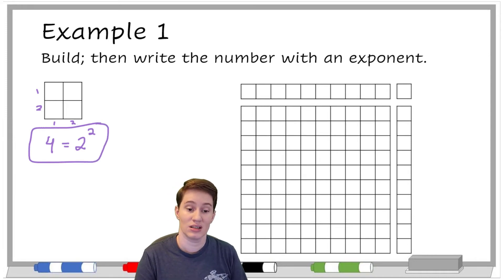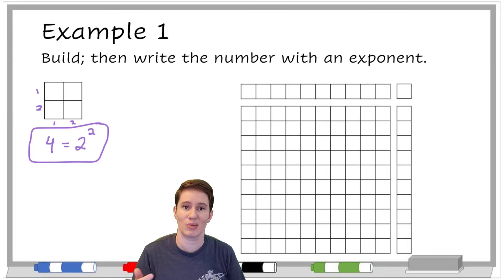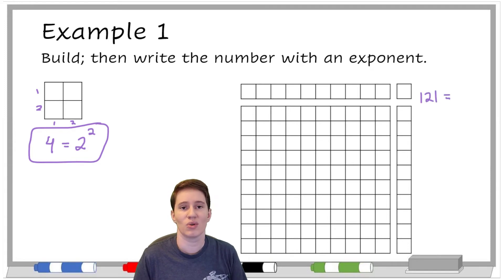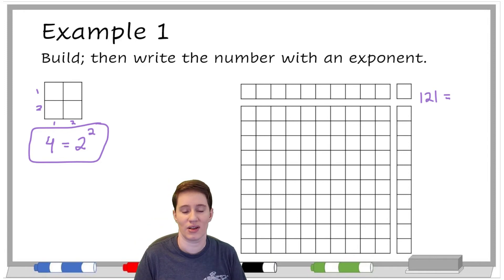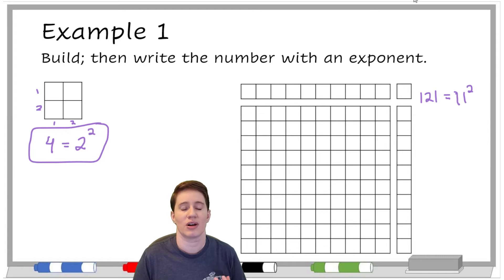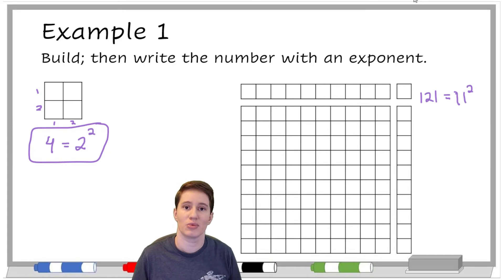We could do the same thing with the second figure. This big set of 10 by 10 would be 100, and then we have a 10 length on top and a 10 length on the side and a 1 at the top. If you add all those together, 100 plus 10 plus 10 plus 1 would be 121. And what is that with an exponent? If we count a vertical side and a horizontal side, that would be 11 and 11. So we'd write this as 11 squared. Another word that comes from this is 'perfect squares' — numbers like 5 times 5, 6 times 6, or 7 times 7; the answers to those are called perfect squares. 121 is a perfect square because it's 11 times 11, and 4 is a perfect square because it's 2 times 2.